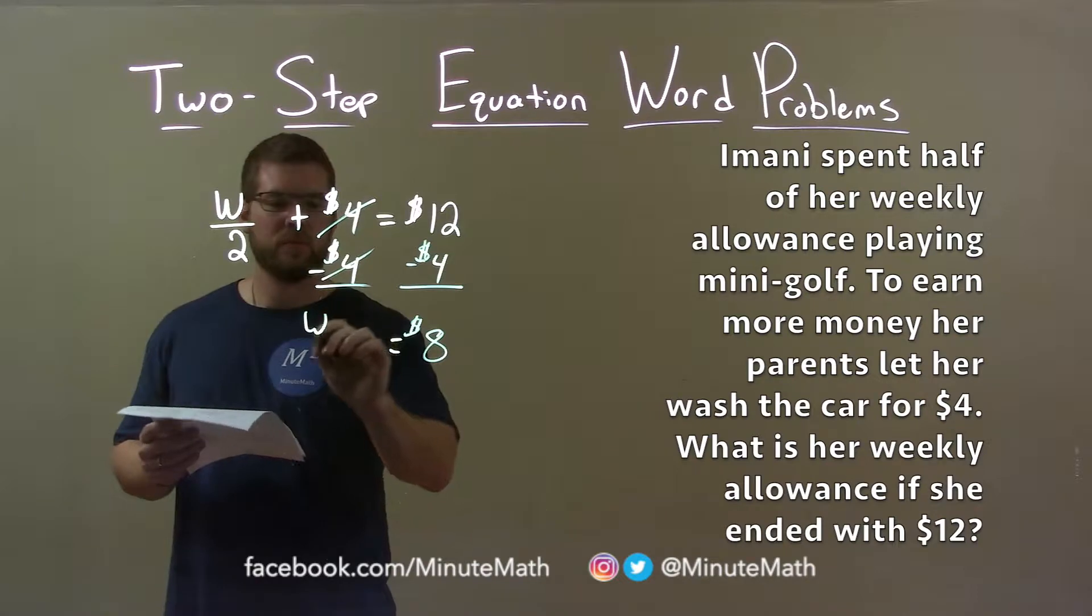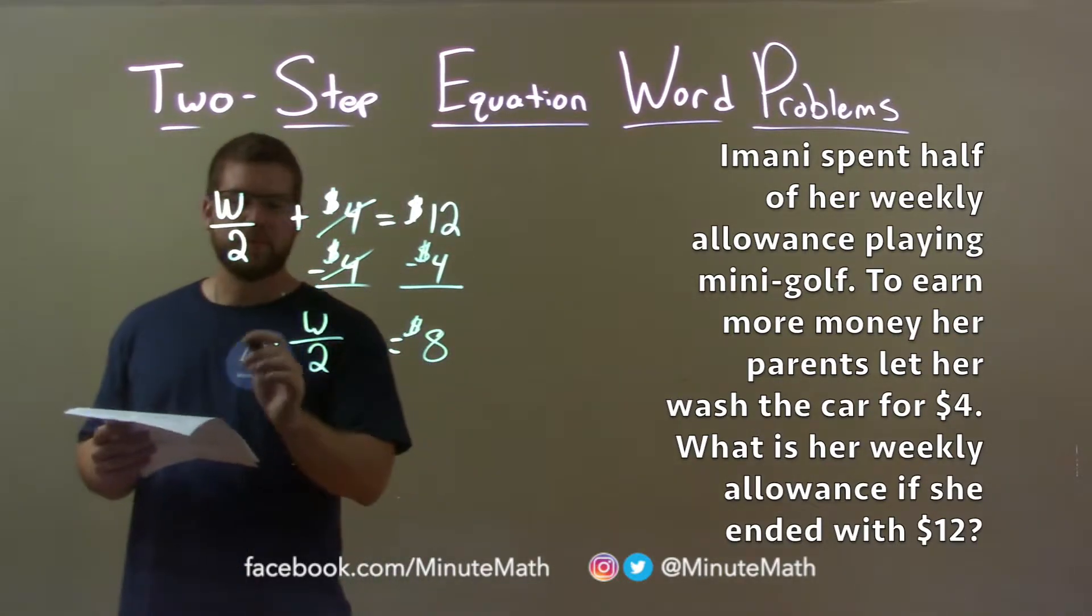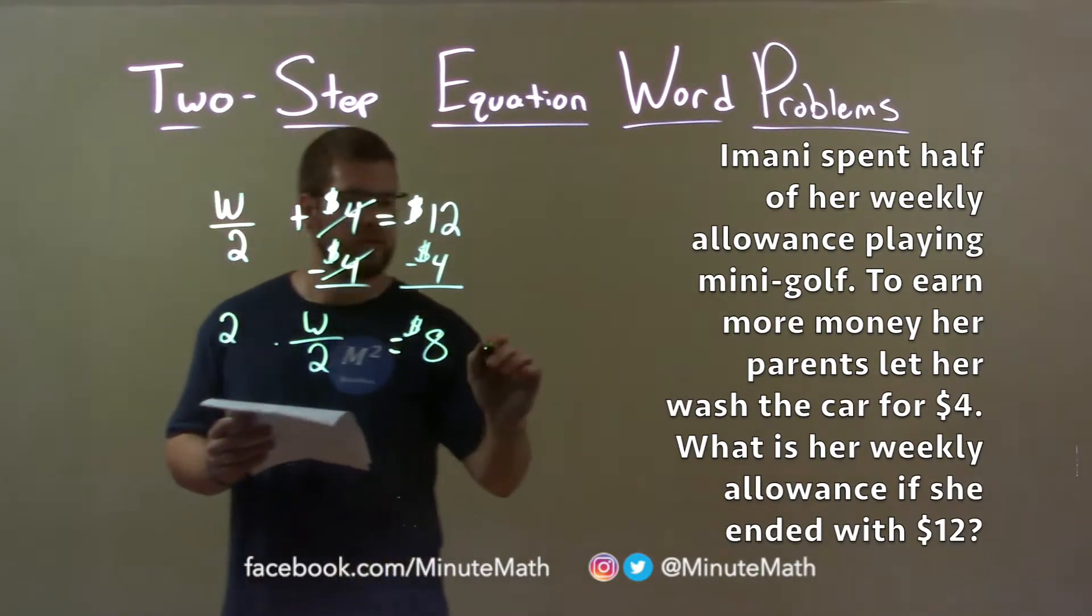Bring down the W over two. Now, we're divided by two, opposite of division, multiplication. Multiply both sides by two.